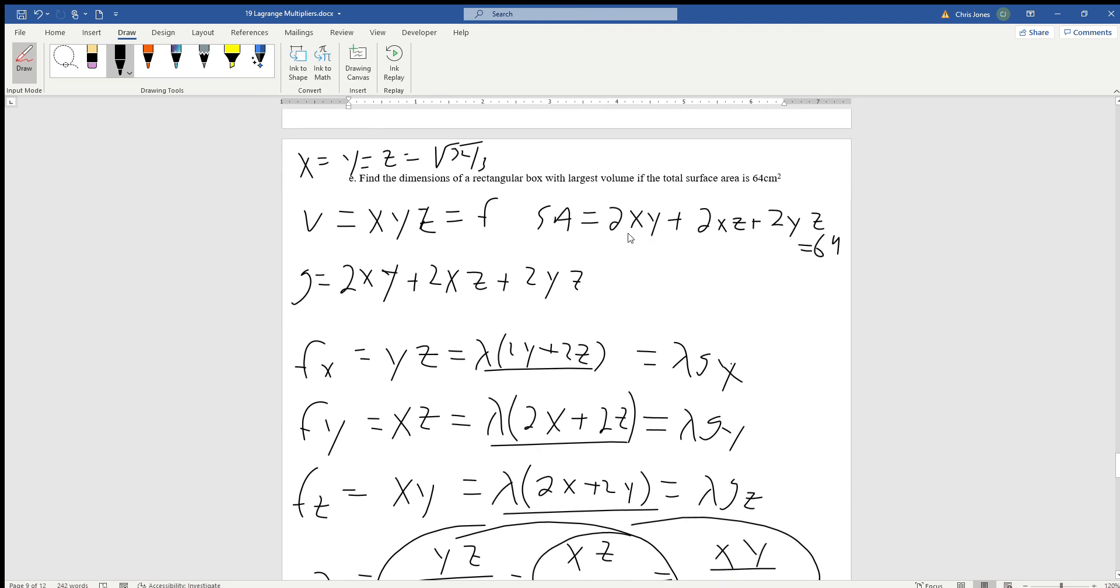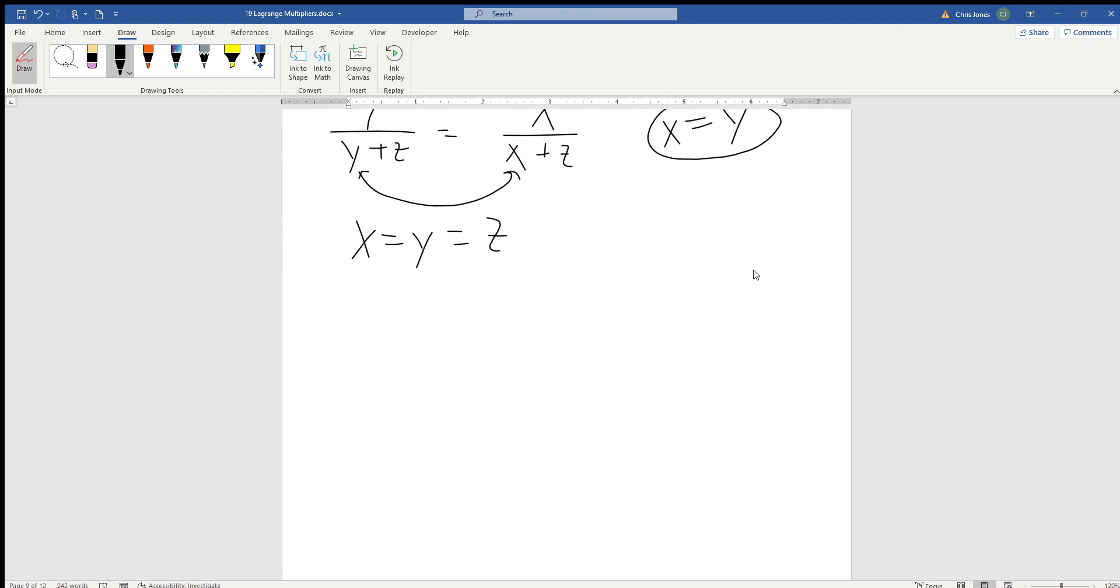Remember we have this constraint that 2xy + 2xz + 2yz equals 64. So let's just substitute everything in terms of x. And so what that would give us is 2xy + 2xz + 2yz equals 64. We divide everything by 2 and we get x times x plus x times x plus x times x equals 32. And we can see the writing on the wall here.